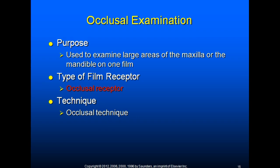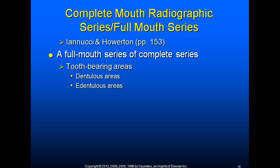A complete mouth radiographic series, otherwise known as a full mouth series or FMX, is a full series of complete x-rays of the tooth-bearing areas, both dentulous and edentulous. This series can include only periapicals or be a combination of periapicals and bite-wings. A total of 14 to 20 films are usually taken. Film size selection is important; these are used to detect disease, foreign objects, and retained roots. Patients usually have a full mouth x-ray series taken every three to five years.